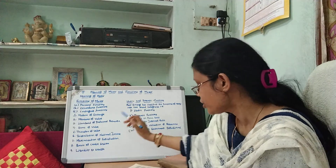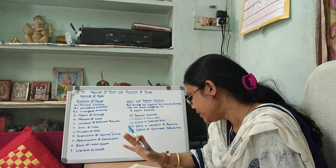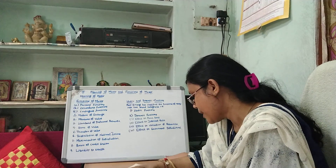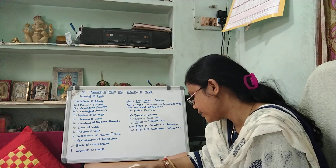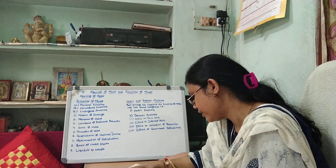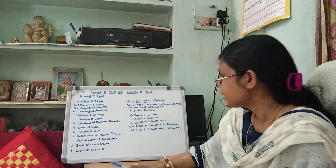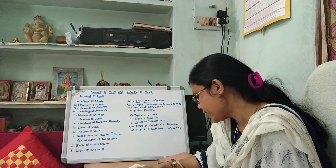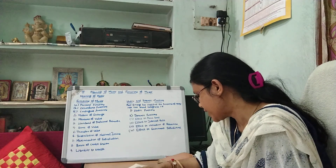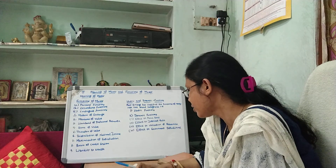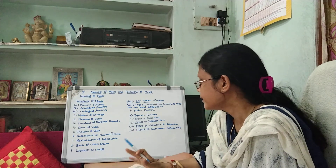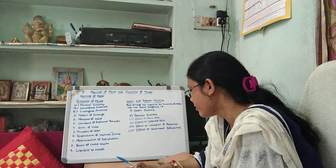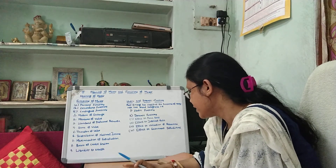Sixth is distribution of national income. Money facilitates the division of national income between people. The total output of the country is jointly produced by a number of people as workers, land owners, capitalists, and entrepreneurs, and in turn has to be distributed among them. Seventh, maximization of satisfaction. Money helps consumers and producers to maximize their benefits. A consumer maximizes satisfaction by equating the prices of each commodity. Eighth, basis of credit system. Credit plays an important role in the modern economic system, and money constitutes the basis of credit.